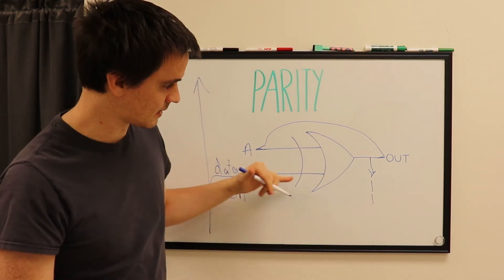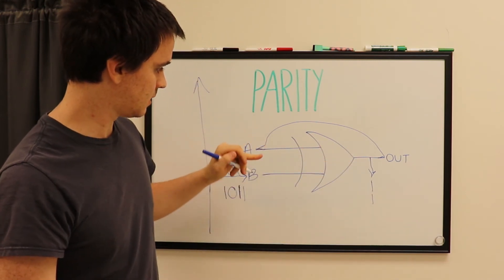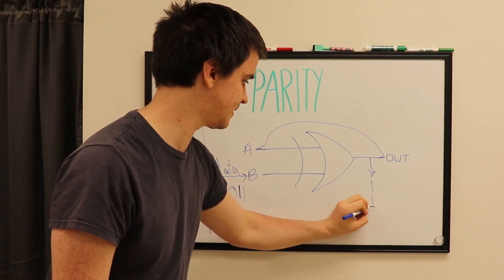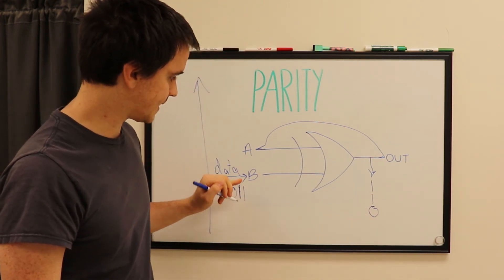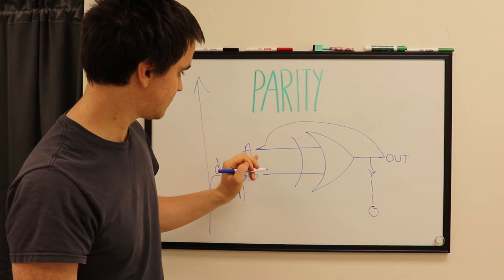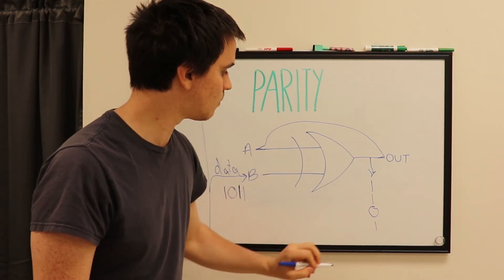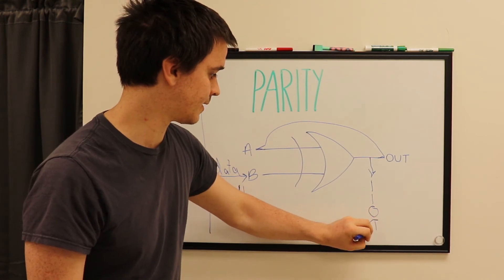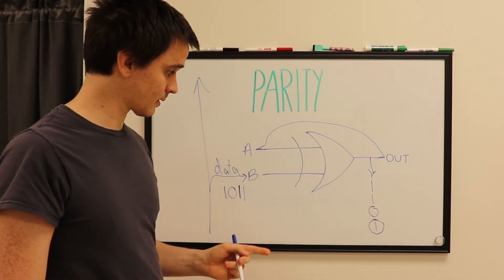And then, we feed in another data bit, which is a 1. So, now we have 1 and 1. And that's even. That's an even number. And then, we're going to feed in that last 1. So, we have the 0 coming in here, and then we have the 1. Now, we have 1. And 1 is our final parity bit. That's the 1 that gets sent out.